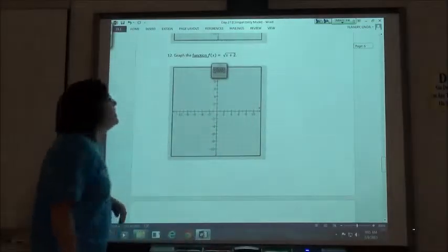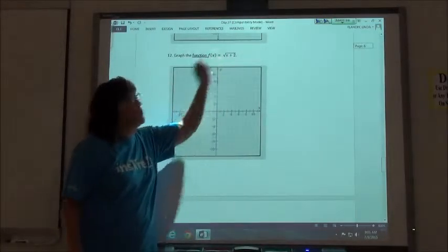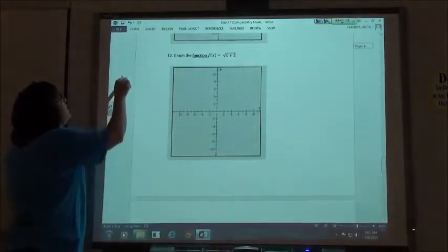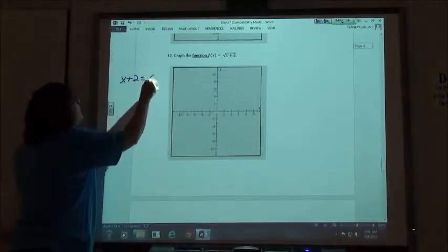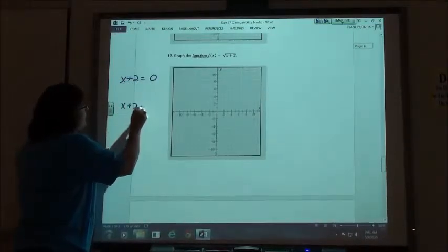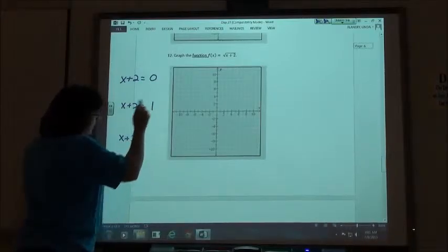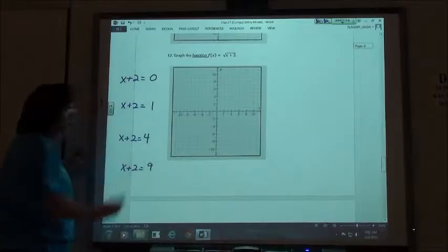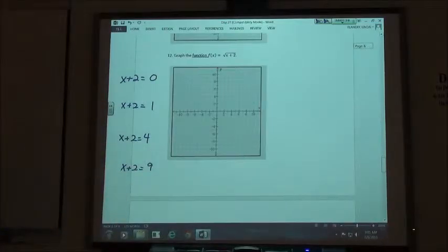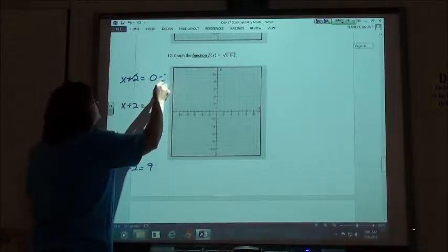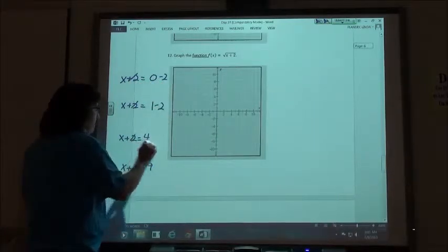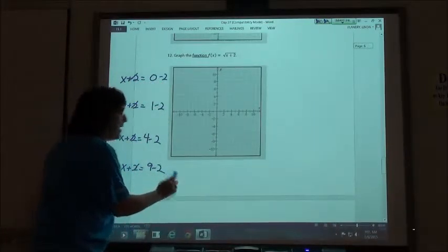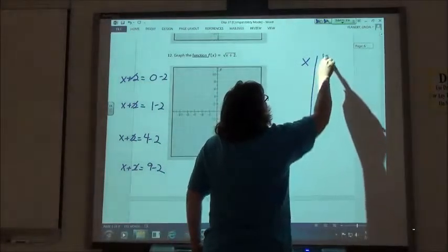So number 12, same kind of thing. I've got the x plus 2 underneath the square root. So we want x plus 2 to equal 0, to equal 1, to equal 4, and to equal 9, so that we can do the square roots. So on each of those, we're going to minus our 2. And so in our table, what value should we use for x?